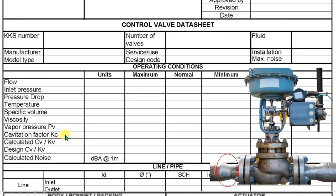Cavitation factor here is only applicable to control valves and indicates the possibility of cavitation in the valves. I will put a link for whoever wants to know more about cavitation. Then we get to the most important parameters in this section, which are CV and CVS. Generally, CV is the valve capacity at any of the three operation points to handle the corresponding flow rate, and will be the main parameter in valve sizing.